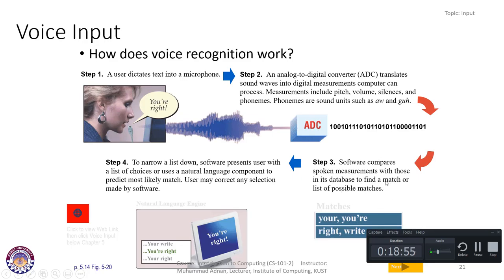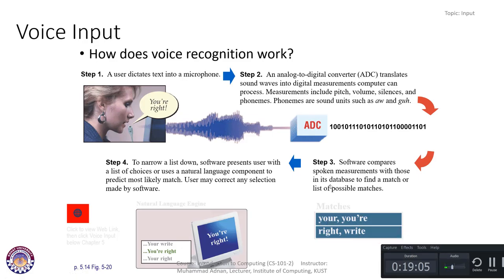In step three, software compares spoken measurements with those in its database to find a match — this is where machine learning works. It finds a list of possible matches and displays the correct text on the screen. To narrow the list down, software presents the user with a list of choices using a natural language component to predict the most likely match. The user may correct any selection made by the software.